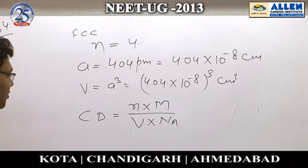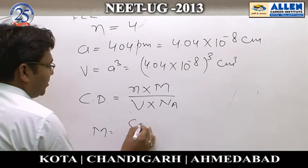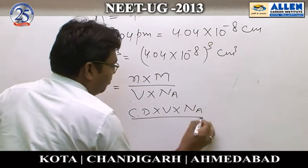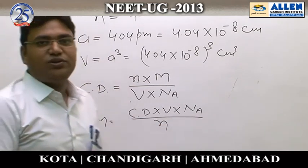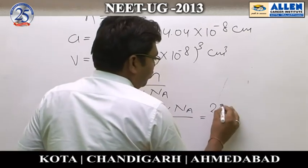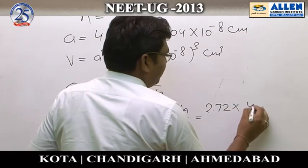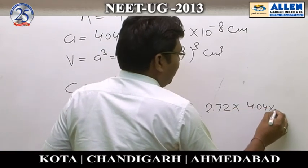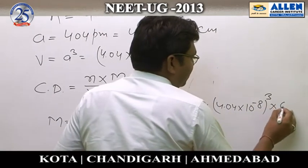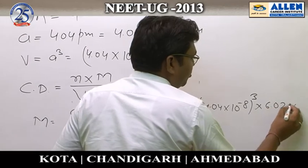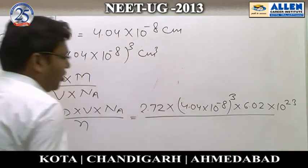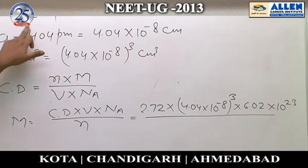Rearranging, molar mass equals crystal density times volume times Nₐ divided by the number of atoms per unit cell. The given crystal density is 2.72, volume is (4.04×10⁻⁸)³, Nₐ is 6.02×10²³, and the number of atoms for FCC is 4.